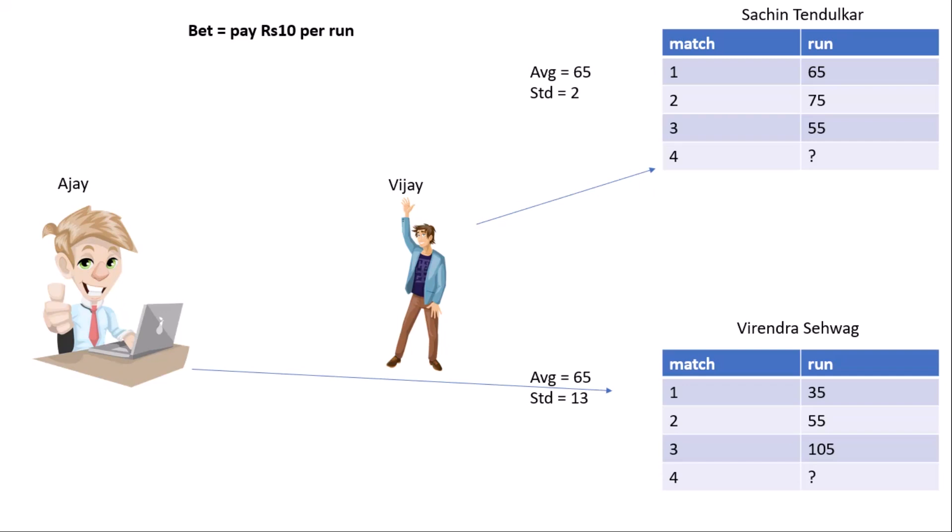The result comes out, and as you can see, Vijay wins by 200 rupees. So knowing the variation in data is very important to make intelligent decisions in your daily life.